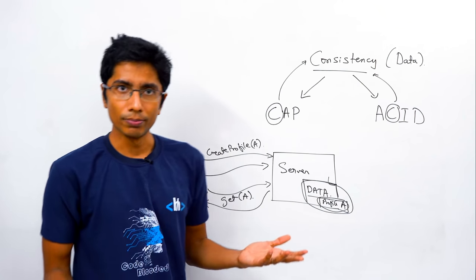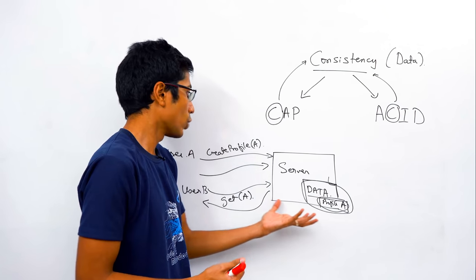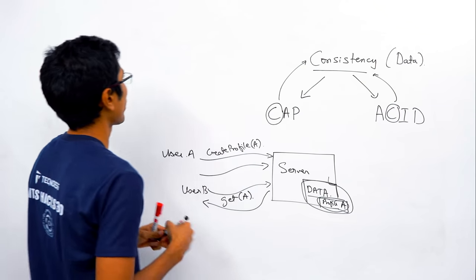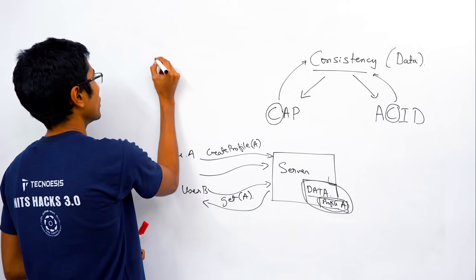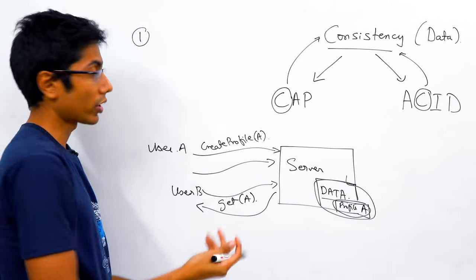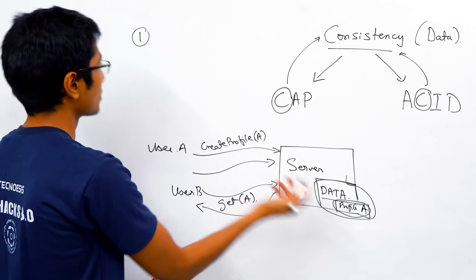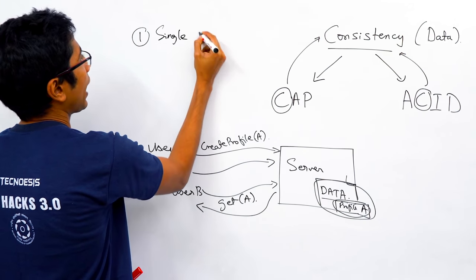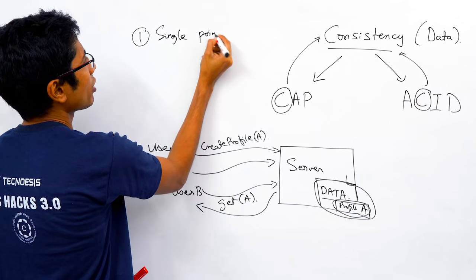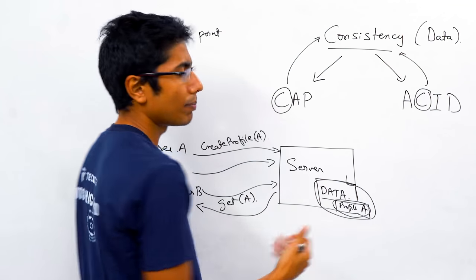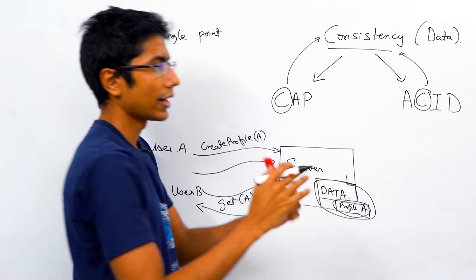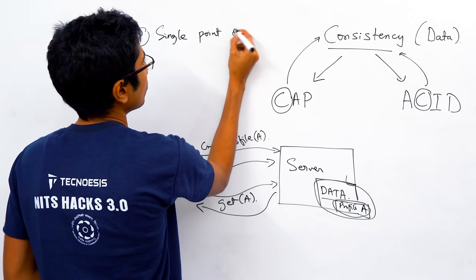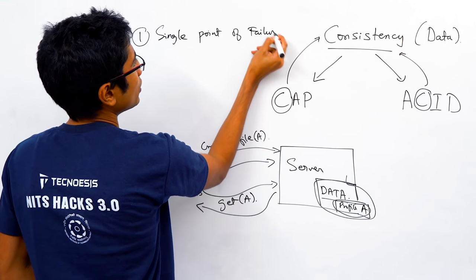What's the problem? The problem is that you have a single server, which means it's a single point of failure. What if there's a network outage? What if a tsunami hits this server? You're going to lose all the data. And even if that doesn't happen, even a power loss means your system is down. That's called a single point of failure.